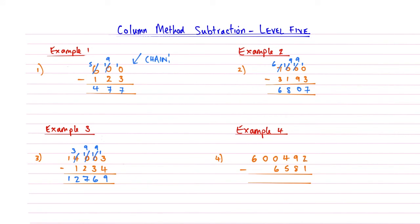Right, and then if we have a look at example number 4. So 2 subtract 1 is 1. 9 subtract 8, that's 1. 4 subtract 5, again, this is one we can't do now. So we're going to set up this chain of borrowing. So you know you're going to have to set up a chain when you see lots of 0s.